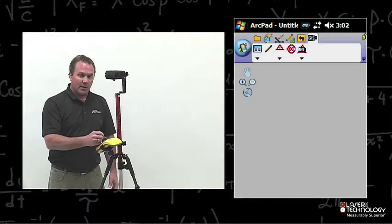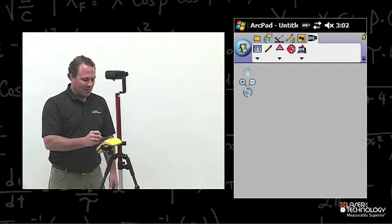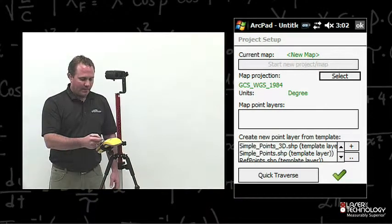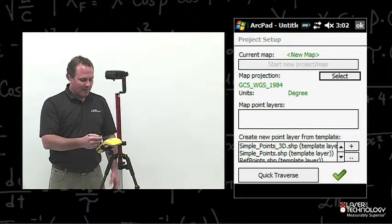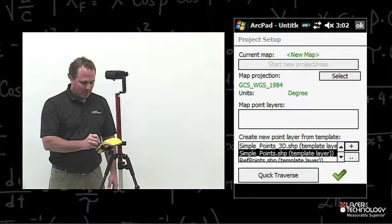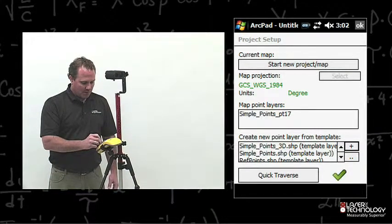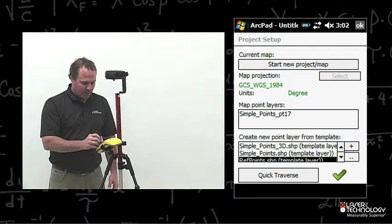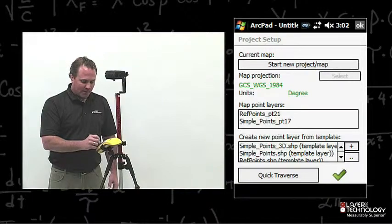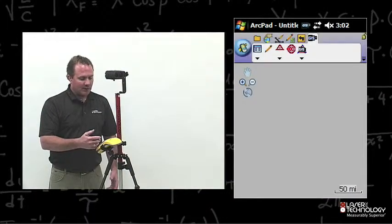We're back at the map. Now we want to press the Project Setup. This is where we need to add some layers. LaserGIS has added some default layers. We want to choose a couple layers here. The simple points, hit the plus, and then we're going to add a reference points layer, hit the plus. From there, hit the green checkmark. That takes us back to our map.